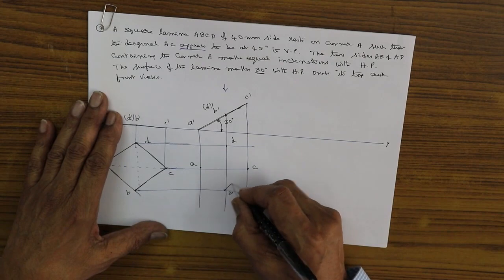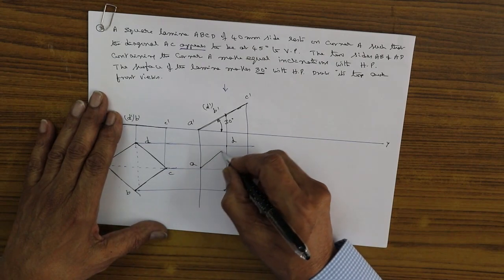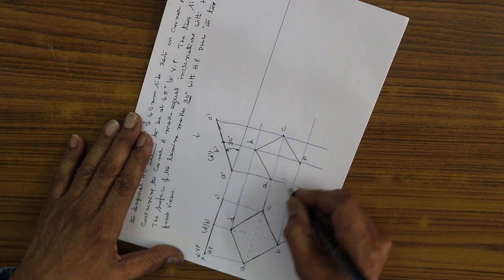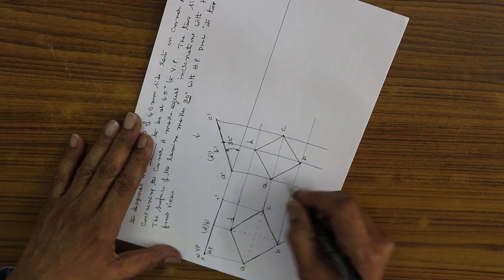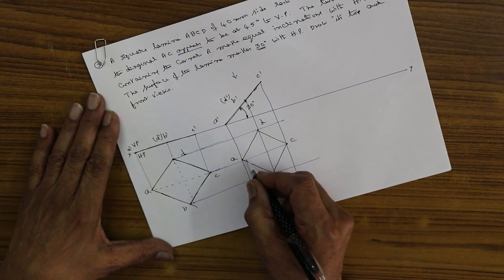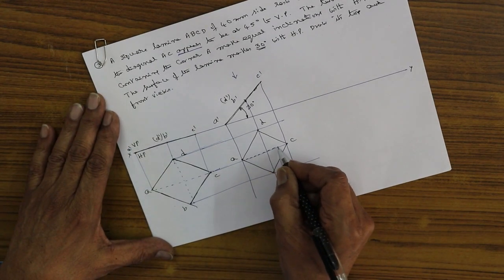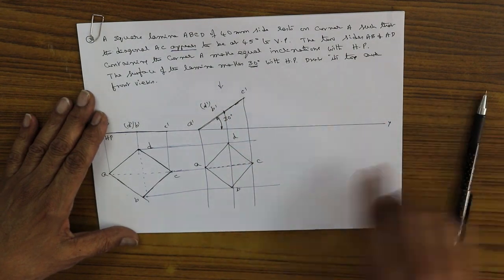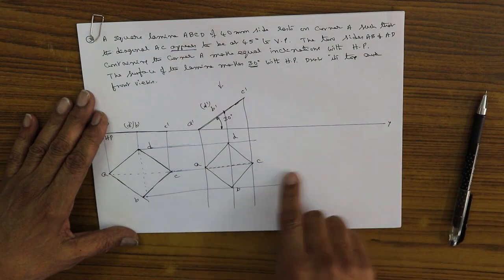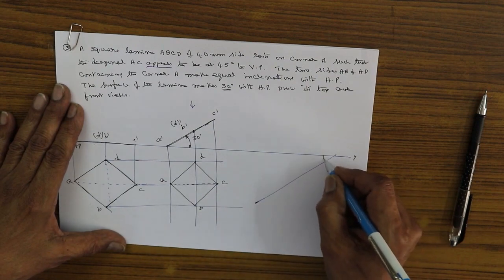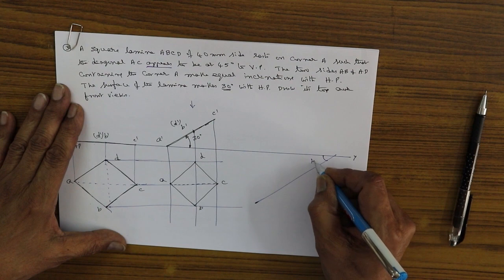Join them in order — this will appear like a rhombus. Now for the diagonal AC, which is inclined to VP at 45 degrees: because the word 'appears' is used, directly redraw the figure at a 45 degree angle. Reproduce the same figure at 45 degrees.